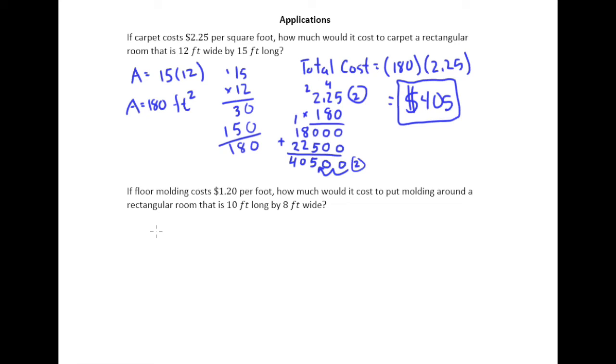So what we need to know is the distance around the room to figure out how much it's going to cost. Well, what is the distance around a room? Well, that's the perimeter.